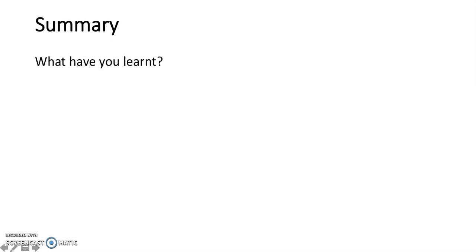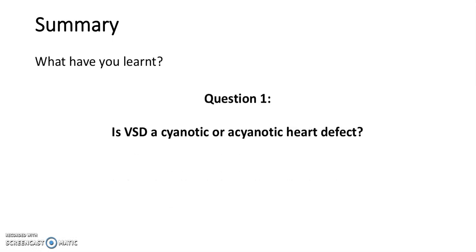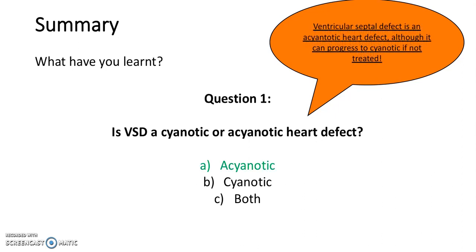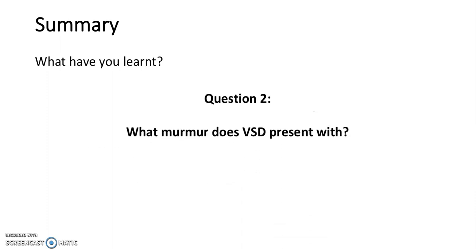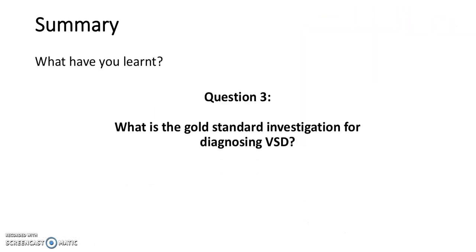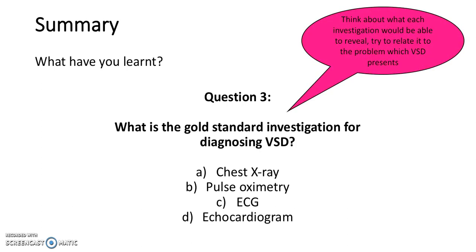In summary, let's go back through the MCQs. Question 1: Is a VSD a cyanotic or acyanotic heart defect? The answer is acyanotic. Question 2: What murmur does a VSD present with? The answer is C, holosystolic. Question 3: What is the gold standard investigation for diagnosing a VSD? The answer is echocardiogram. Well done, we've come to the end of the presentation. Please come back for more revision materials. Bye!